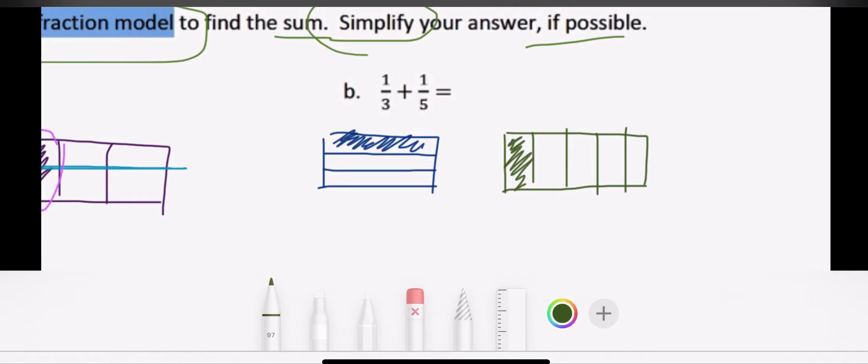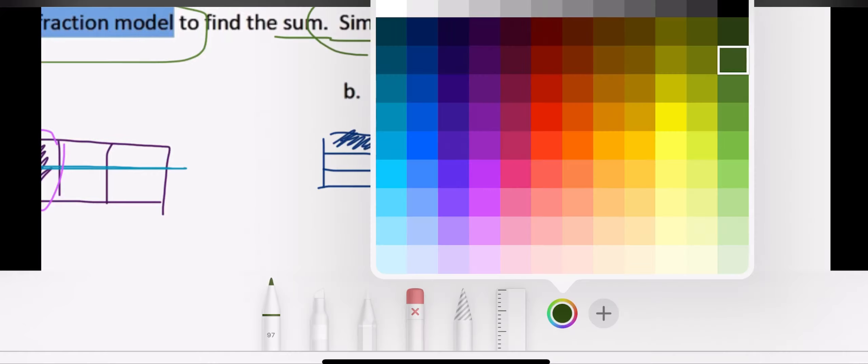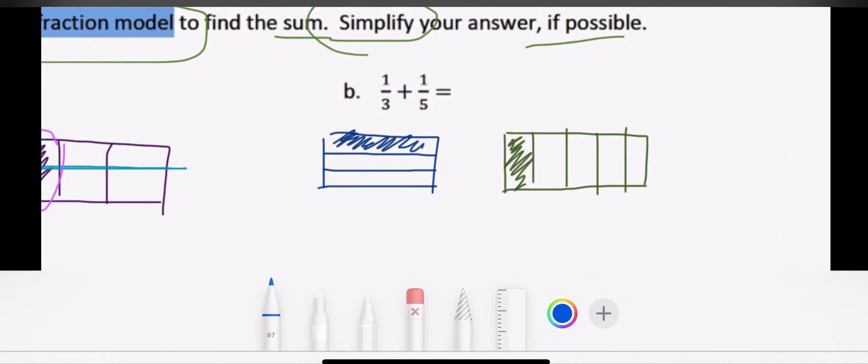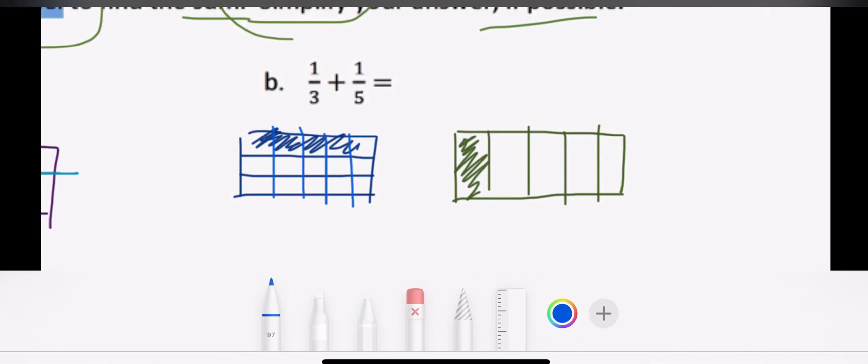So I'm trying to find the sum or the addition answer of these two fractions. So now, remembering back to my previous problem, my next step is to actually split up my one third into those fifths. So I'm going to have one, two, three, four, and five. And then I have to do the same thing to my one fifth. I'm going to split those fifths into thirds.